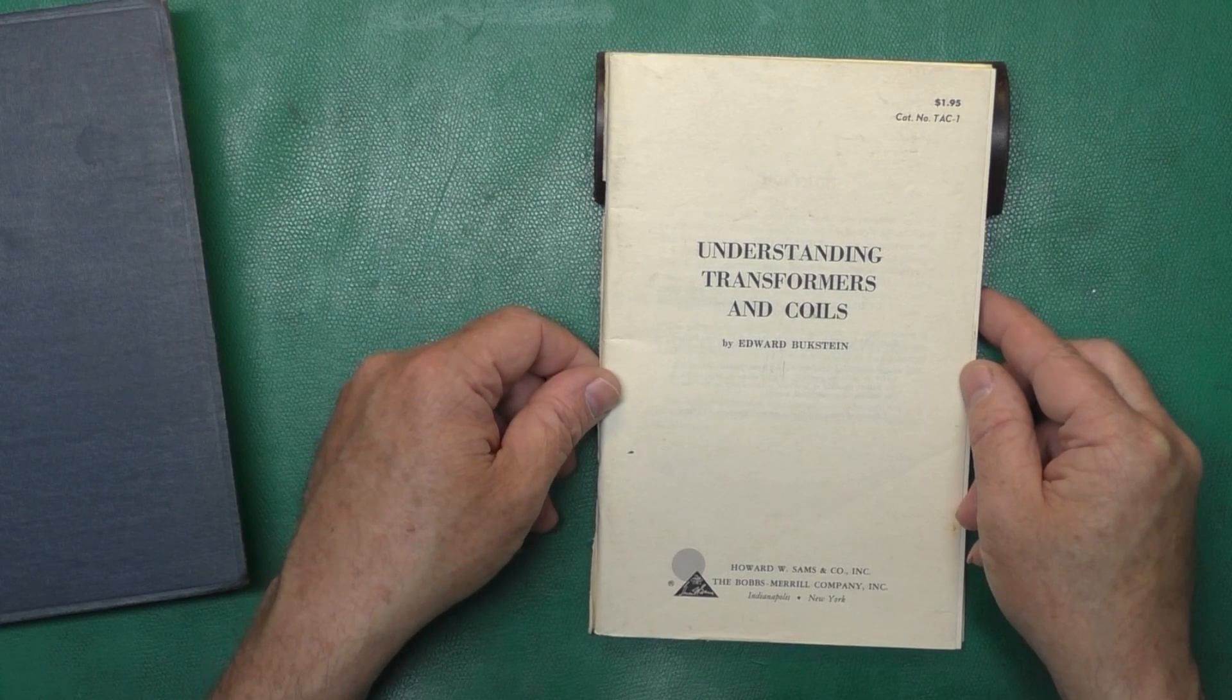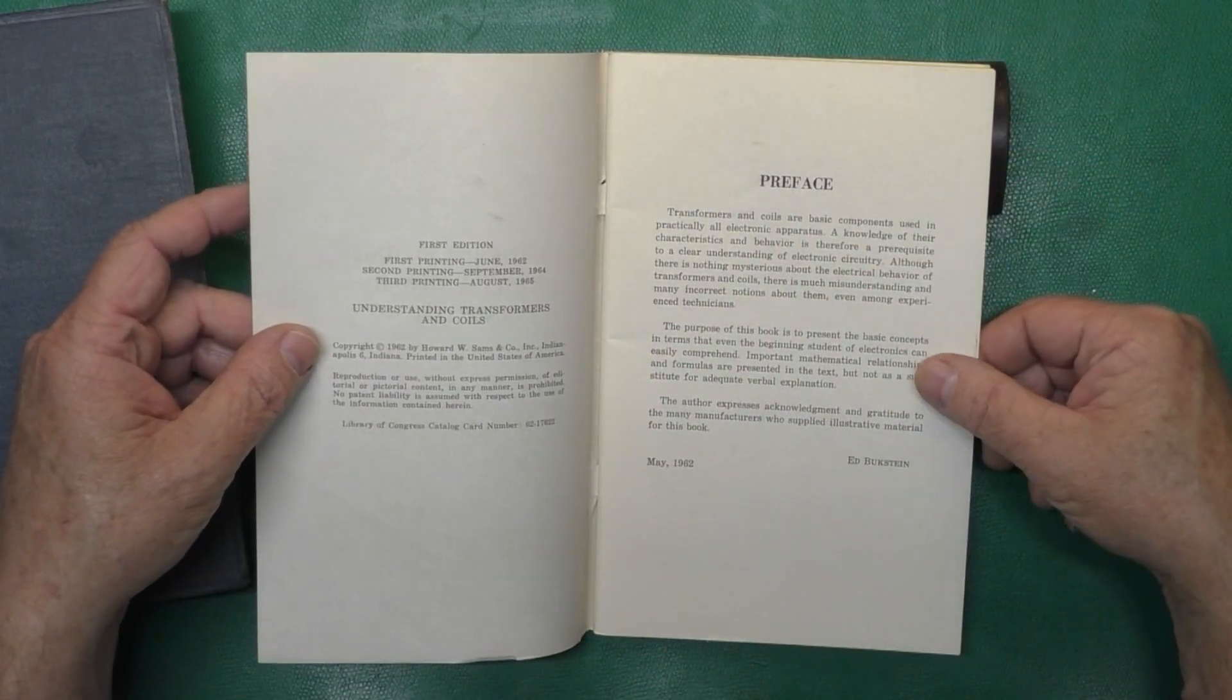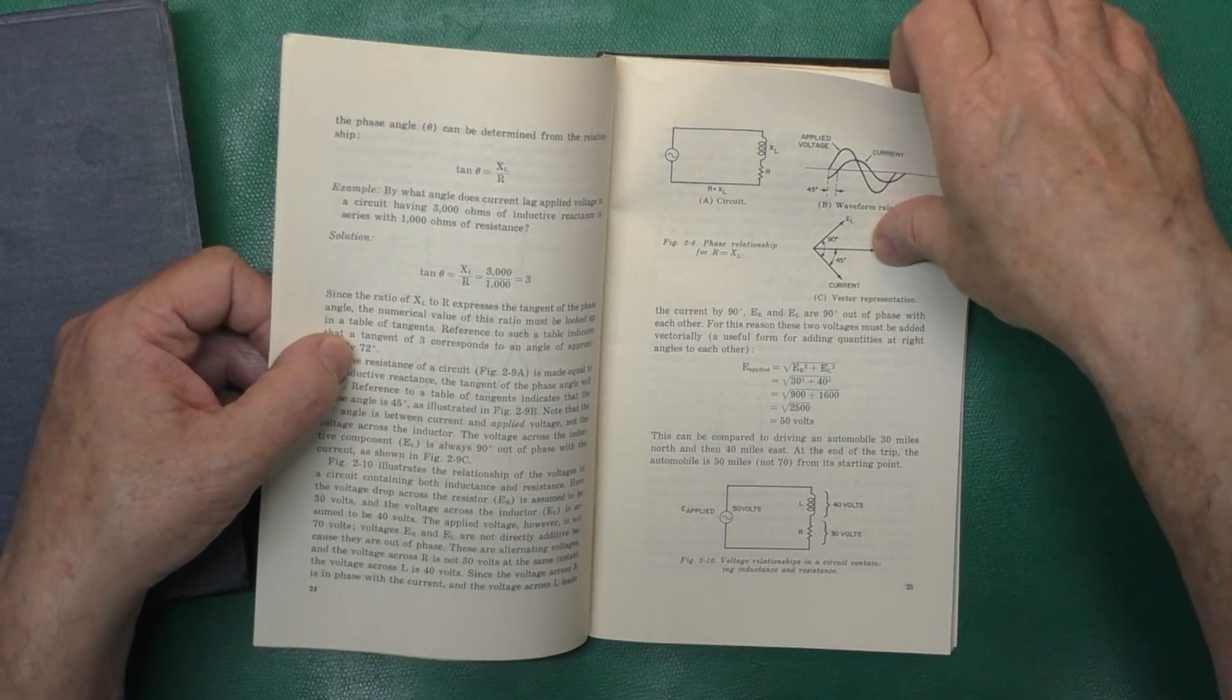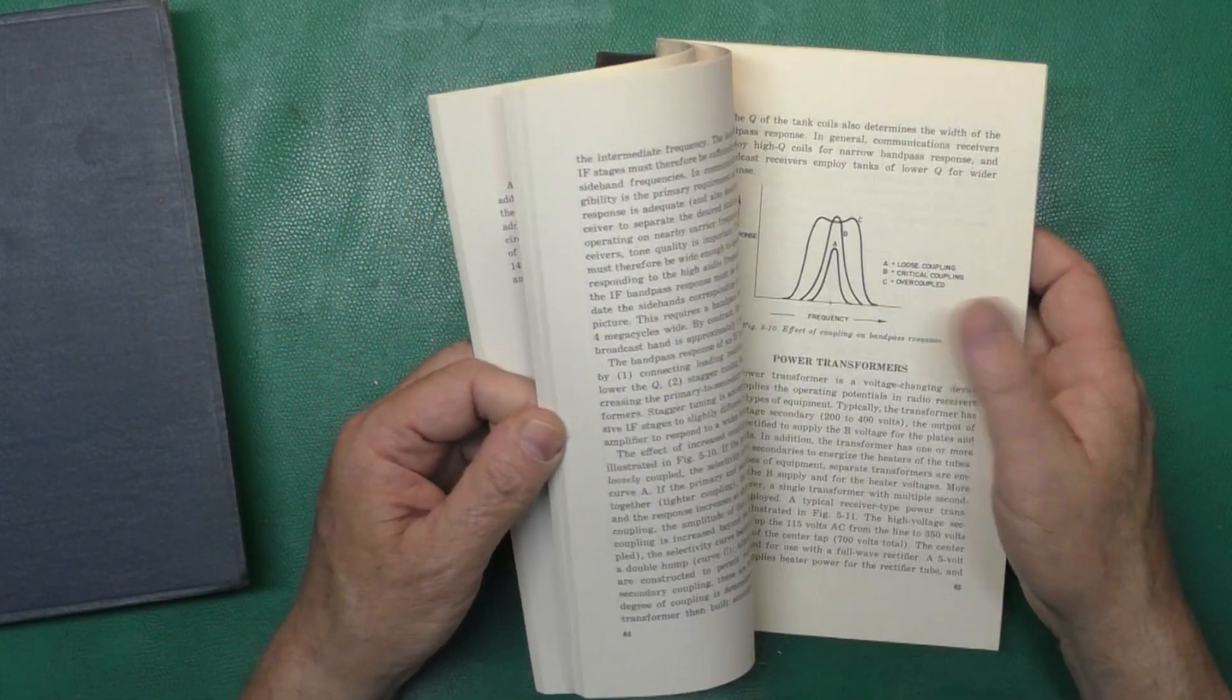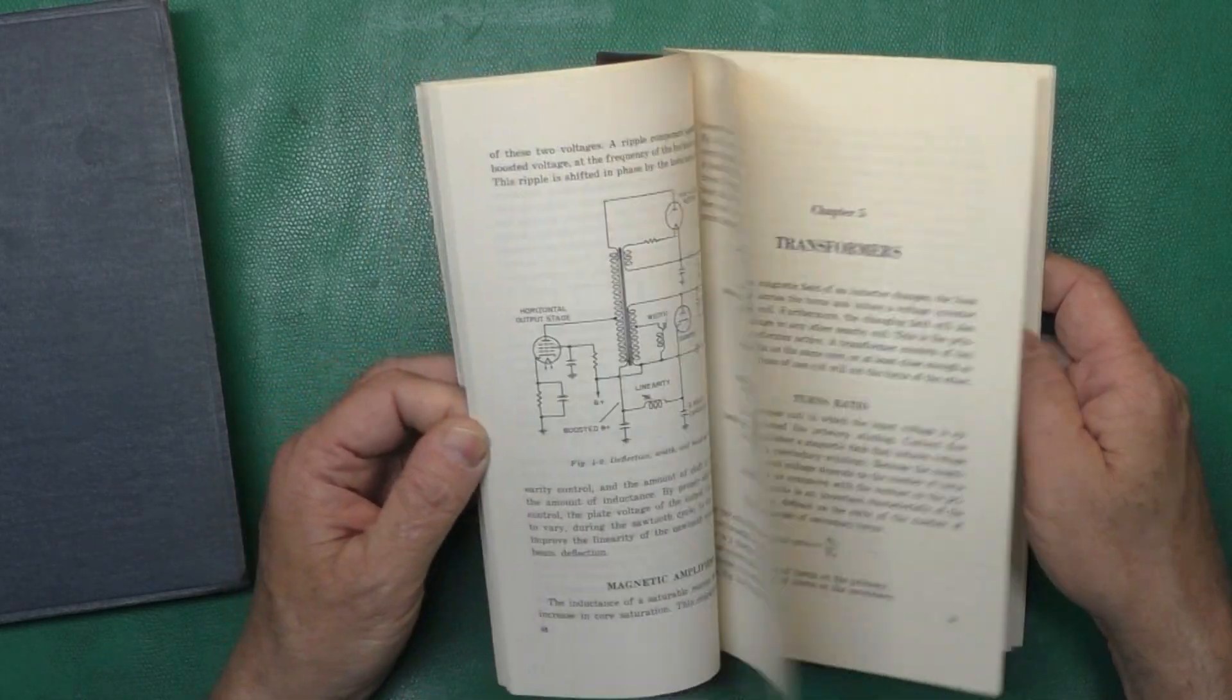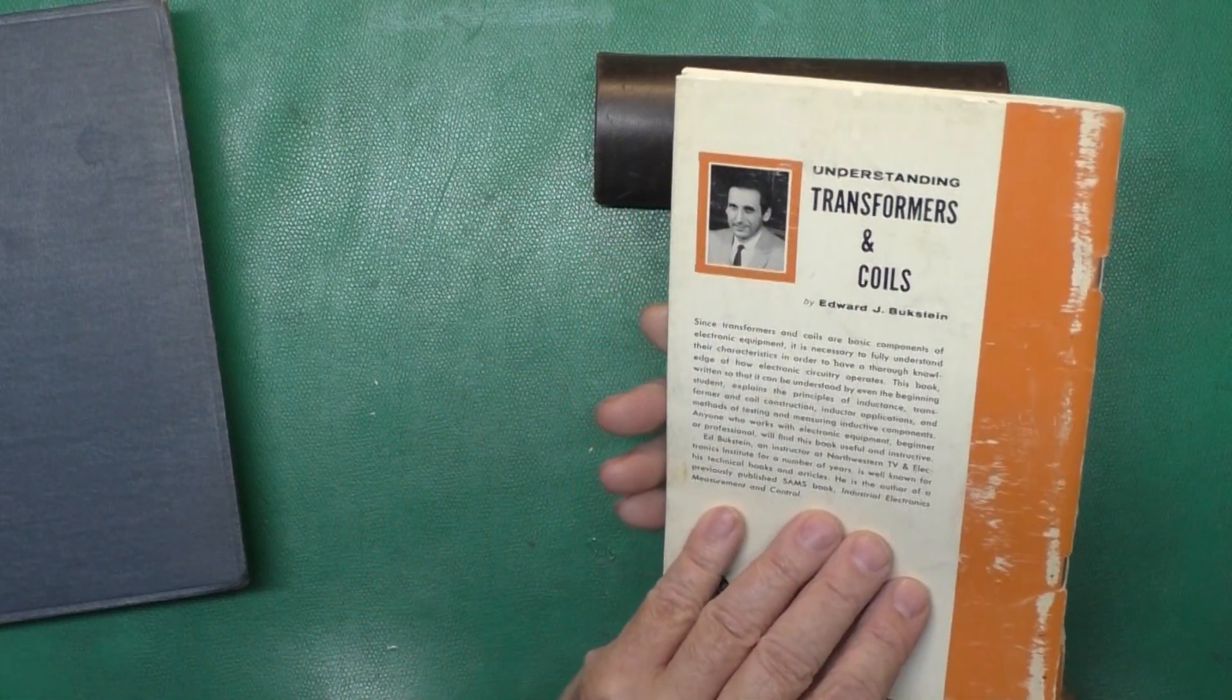Understanding Transformers and Coils by Edward Buckstein. Again, Howard Sams catalog number, TAC-1, $1.95. This is the third printing from 1965. And this is really some practical information about Transformers and Coils. So, it's not a lot of this overly in-depth stuff you would find in a textbook. It's more useful stuff that a technician or engineer who's building and fixing stuff would need. Very helpful book. It's missing the front cover. You can see the back cover there. It's missing the front cover, but the important stuff is still inside.